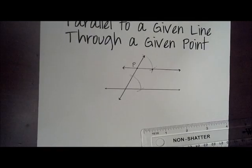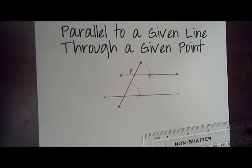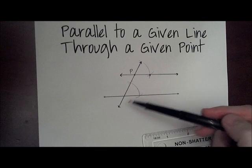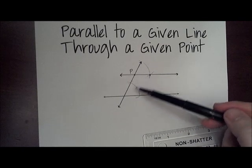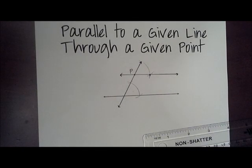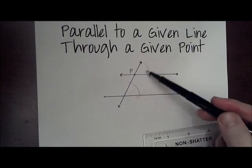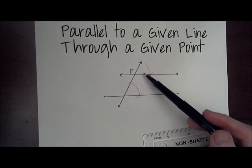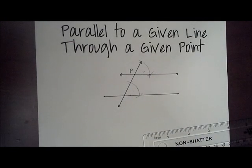The justification for this is that if two lines are cut by a transversal so that the corresponding angles are equal to each other, then the lines are parallel. Now we know the corresponding angles are equal to each other because we constructed an angle that was congruent to the given angle, which was construction number two earlier in the review. Thank you, thanks for watching.